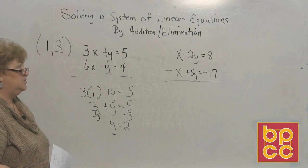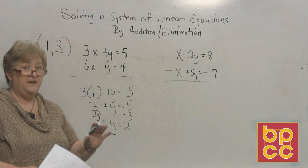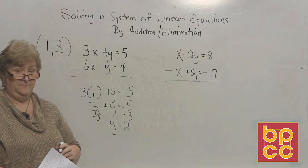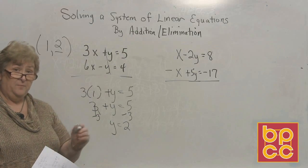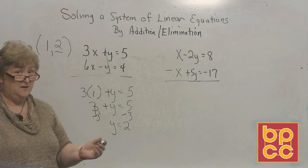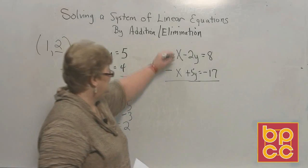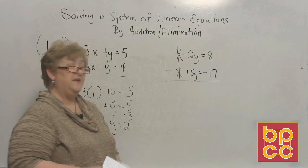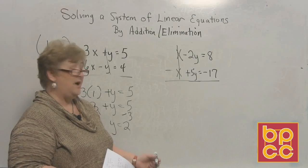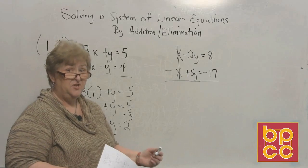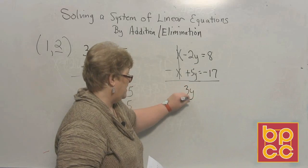Now let's look at this one. Do you see an x or y already prepared to be cleared out? Look at those x's — I have a positive 1x and a negative 1x; they clear themselves out. Always look for that first. Now let's add our y's: I have a negative 2y and a positive 5y — negative 2 added to positive 5 is a 3y.